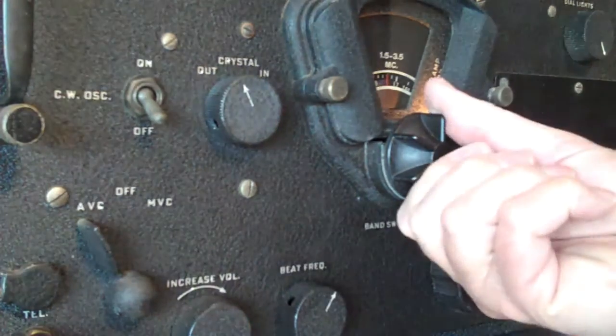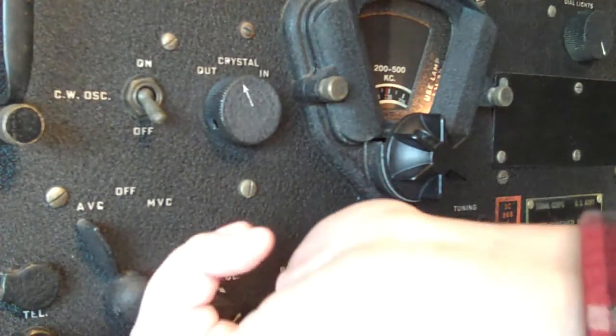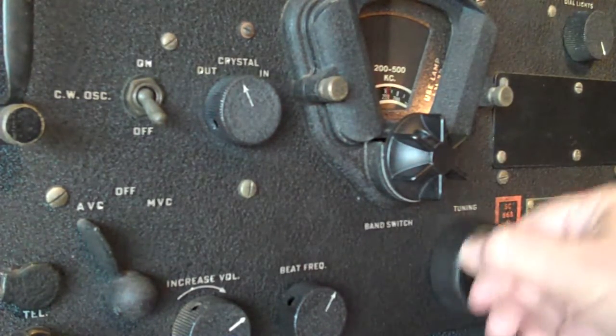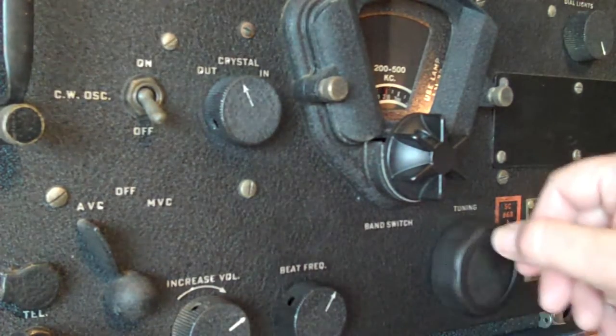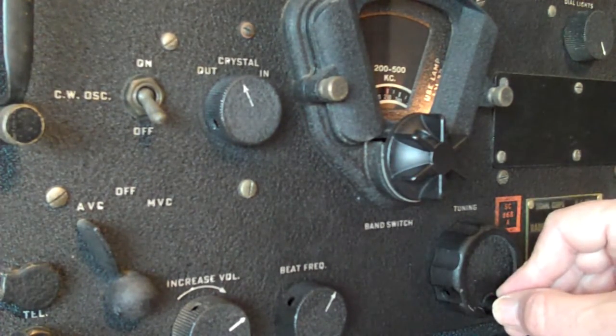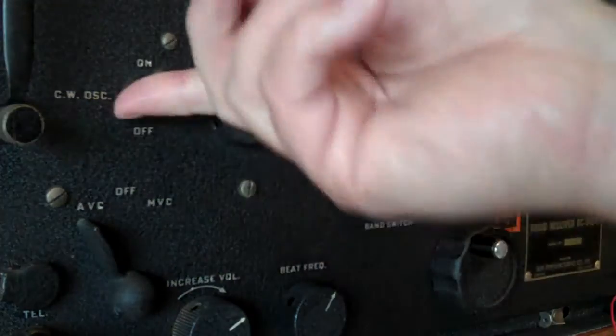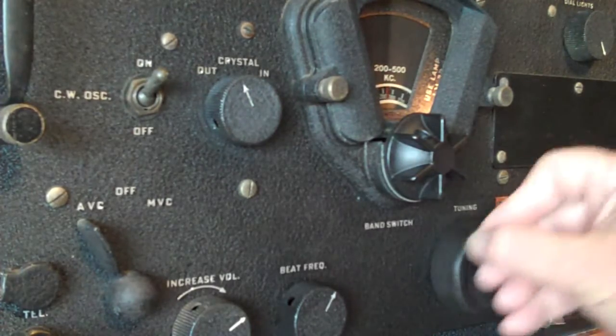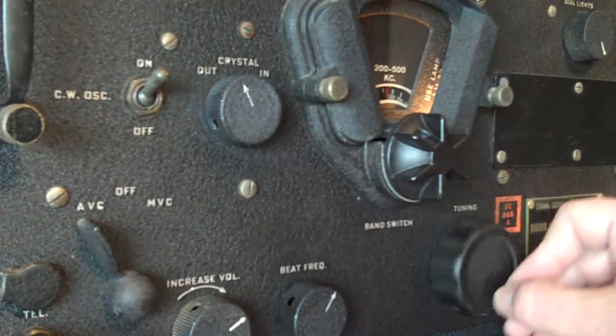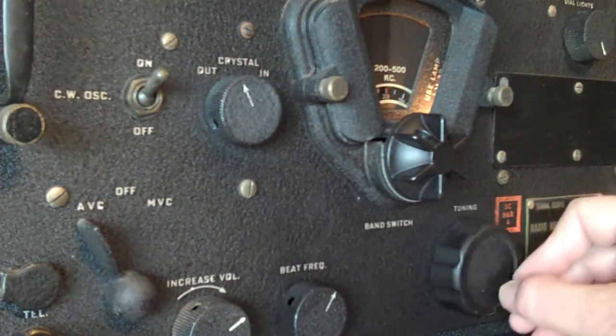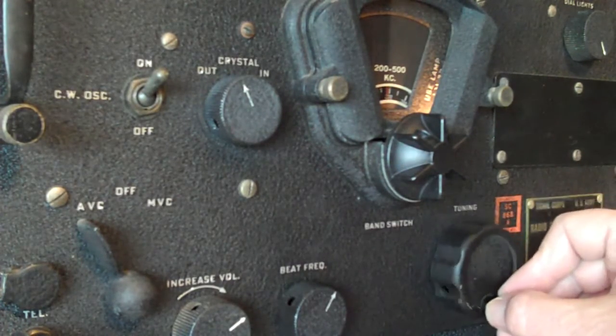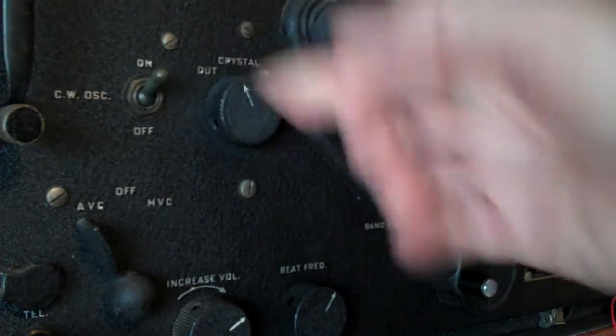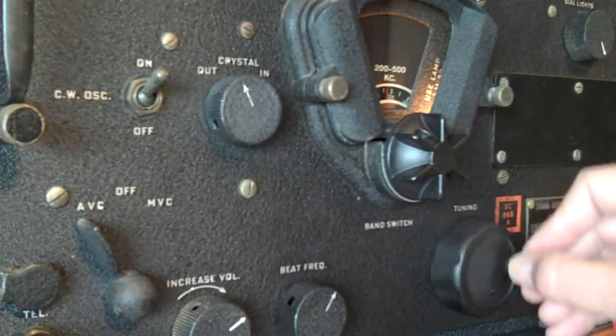Okay, let's tune some other bands. This is 200 to 500 KC, one of the airport beacons. I like to turn on the CW oscillator, makes it easier to tune. There's another one, there's several of them down on this. Oh, here's a strong one.